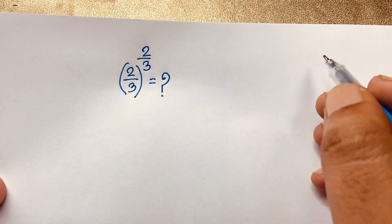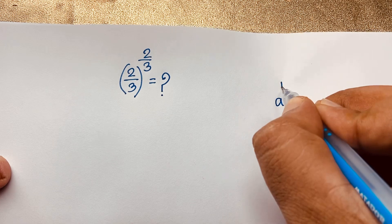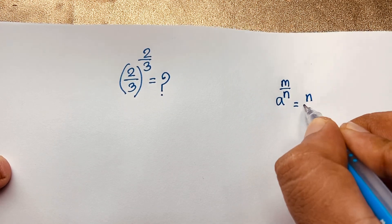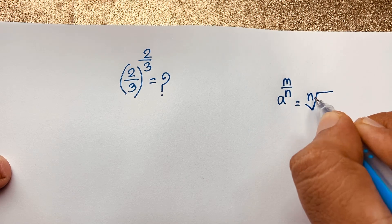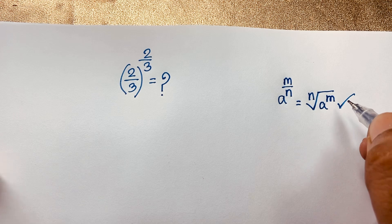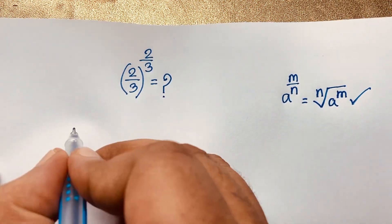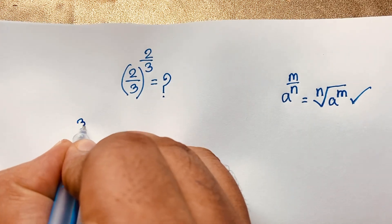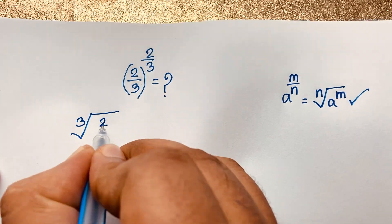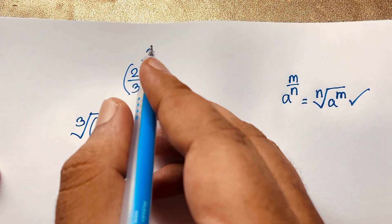First of all, we know that a to the power m over n equals the n-th root of a to the power m. If I apply this formula here, this expression will be the cube root of 2 over 3, bracket, to the power 2.